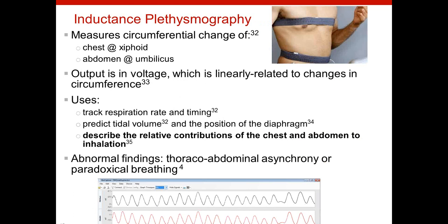This is where the BioRadio came in. We measured the change in circumference of the ribcage and abdomen during quiet and deep breathing in three different positions: supine, sitting, and standing. This was taken by respiratory inductive plethysmography bands, or RIP bands, whose output is in voltage that is linearly related to changes in circumference. While RIP bands are often used to track respiration rate and timing or to predict tidal volume, we planned to use them to describe the relative contributions of the ribcage and abdomen to breathing. In the picture, you can see there's a band around the chest and a band around the abdomen, with actual output we took from the BioRadio — one signal is chest and one is abdomen.